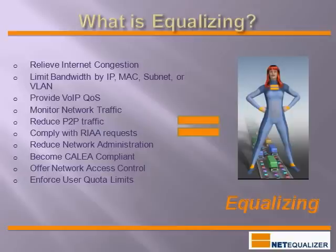Many of you might be familiar with other WAN optimization techniques, such as compression, caching, and layer 7 application shaping. Equalizing is the term we use to describe our method of controlling your bandwidth resources so that all users get their fair share of the network.